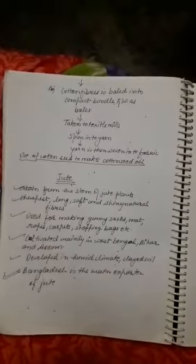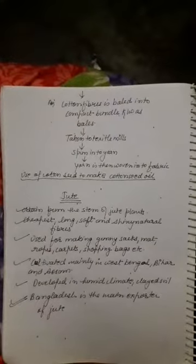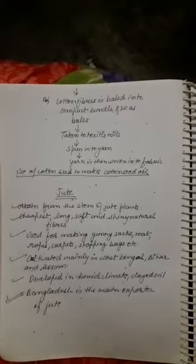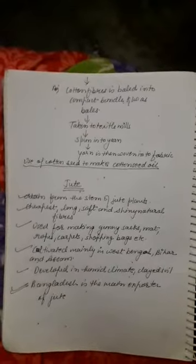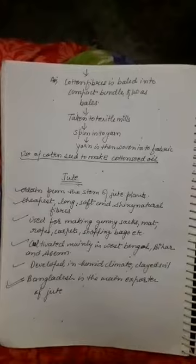After ginning, cotton fibers are bundled together into compressed bundles called bales, which are sent to textile mills. At the mills, the fibers are made into yarn. Chemical processes and methods are then applied to the yarn to produce fabric. The cotton seeds are also used to make cotton seed oil, and the white fibers are used to make fabrics.